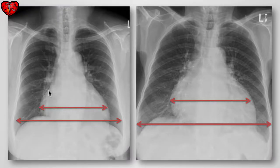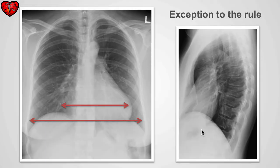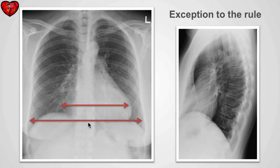In both examples shown, the size of the cardiopericardial silhouette in relationship to the diameter of the thorax is greater than 50% and is abnormal. One exception is if the patient has a pectus excavatum deformity. With pectus excavatum, the sternum lies more posterior than normal, causing mass effect on the heart which is flattened between the sternum and the vertebral bodies. On the PA examination, the heart will look enlarged but only because of this deformity.